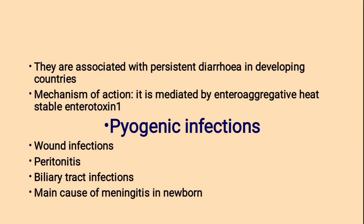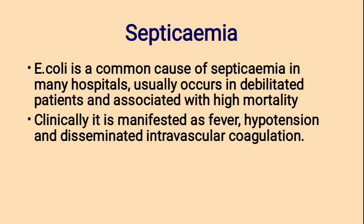Pyogenic infections include wound infection, peritonitis — inflammation of the peritoneum — biliary tract infection, and E. coli is a main cause of meningitis in newborns. Septicemia: E. coli is a common cause of septicemia in many hospitals. It usually occurs in debilitated patients and is associated with high mortality. Clinically it is manifested as fever, hypotension and disseminated intravascular coagulation — a condition affecting the blood's ability to clot and stop bleeding.